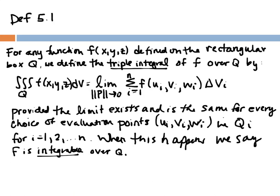We're going to develop this idea of triple integrals much the way we developed double integrals. We're in 4D so we don't have a visual picture, but we start with this definition, which looks much like the definition for double integrals. For any function f(x, y, z) defined on a rectangular box Q, we define the triple integral of f over Q as the limit as partition size goes to 0 of the summation from i=1 to n of f(u_i, v_i, w_i) ΔV_i — that capital V stands for volume — provided the limit exists and is the same for every choice of evaluation points (u_i, v_i, w_i) in Q_i. When this happens, we say f is integrable over Q.